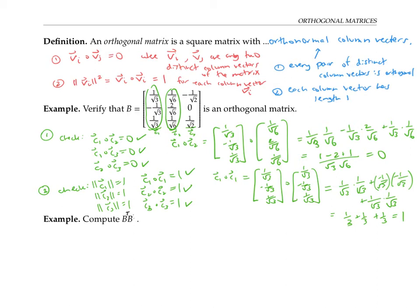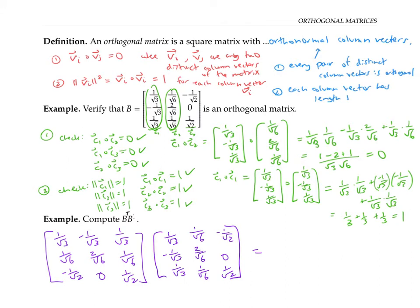So B is indeed an orthogonal matrix. Let's see what happens when we compute B transpose times B. Here's B transpose, where every row has been turned into a column, multiplied by the original matrix B. The answer should be a three by three matrix. The upper left entry comes from the first row of B transpose times the first column of B — that's the same as the dot product of the first column of B with itself, which equals one.